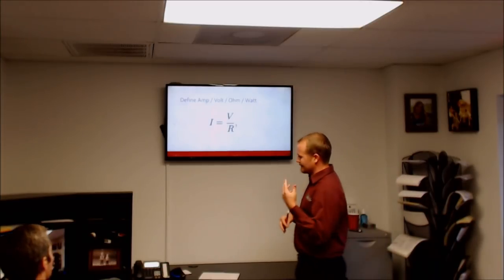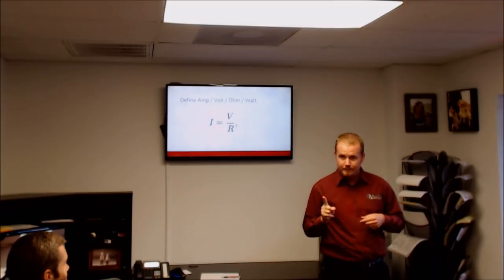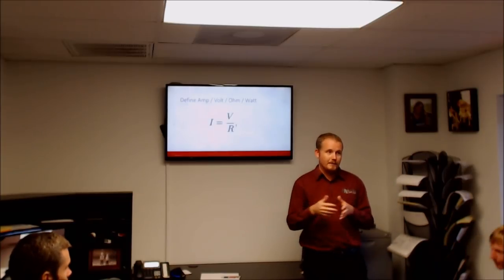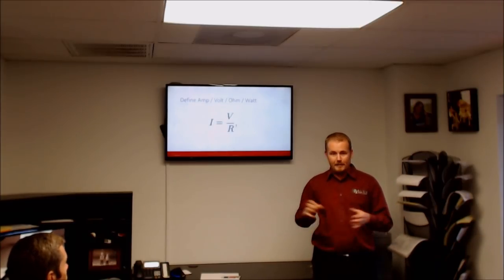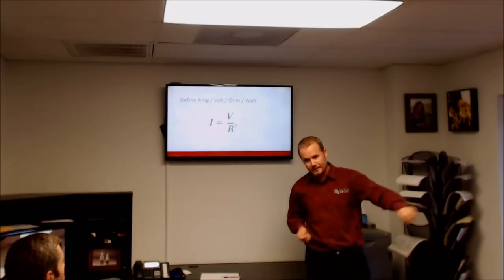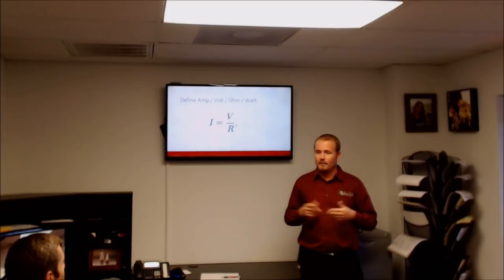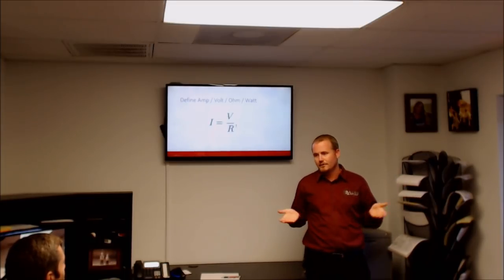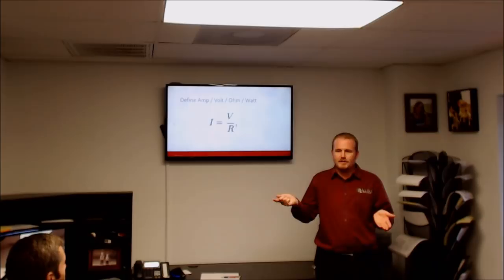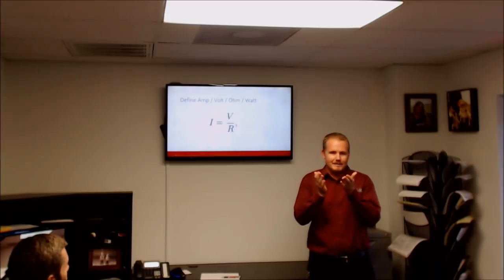At AC school, my instructor asked: you have two extension cords, one big fat one and one little skinny one, and you've got to run a big saw at the end. How are you going to hook them up? Most people say put the fat one first and then the skinny one — but the truth is it makes no difference. Because the electricity has to flow through that entire path. It doesn't matter which you put first; what matters is the resistance of that entire circuit.